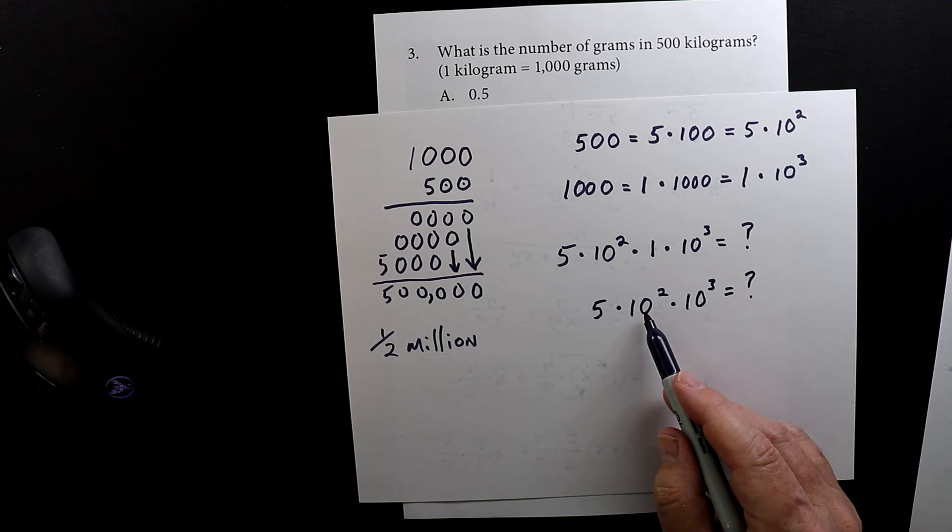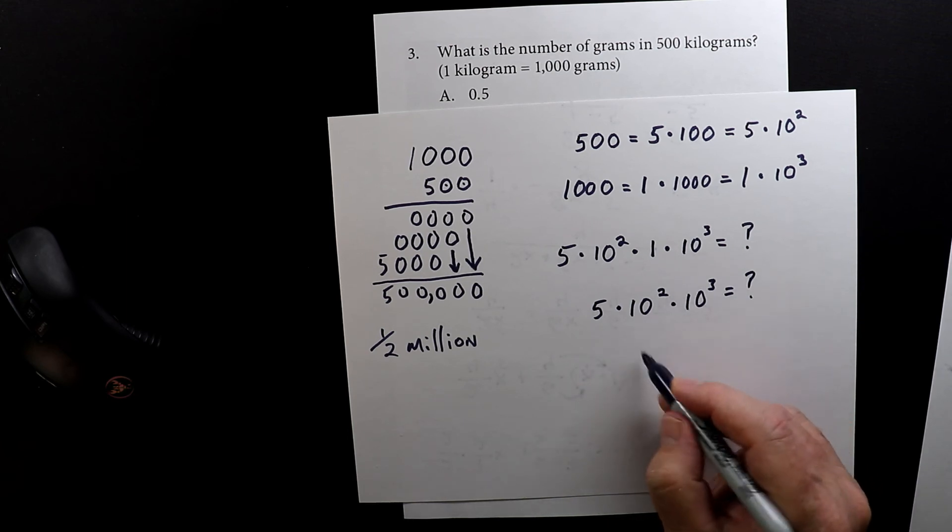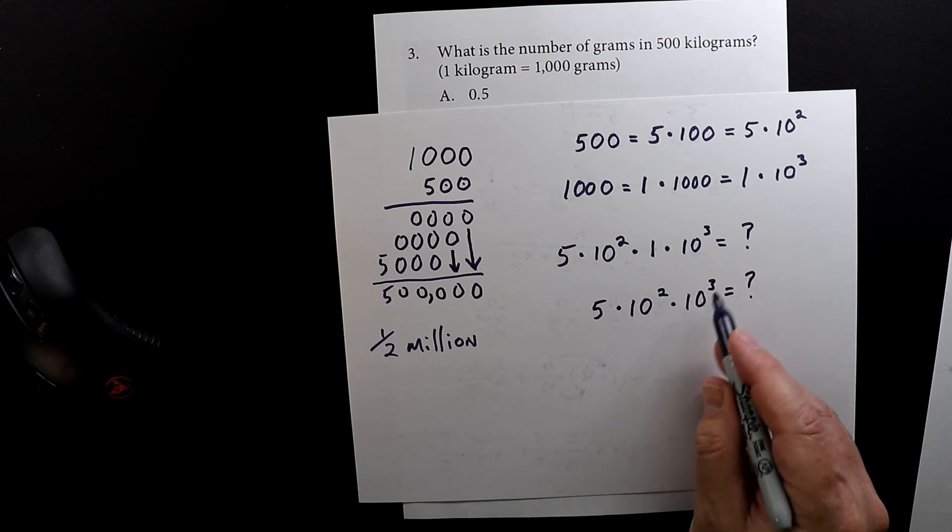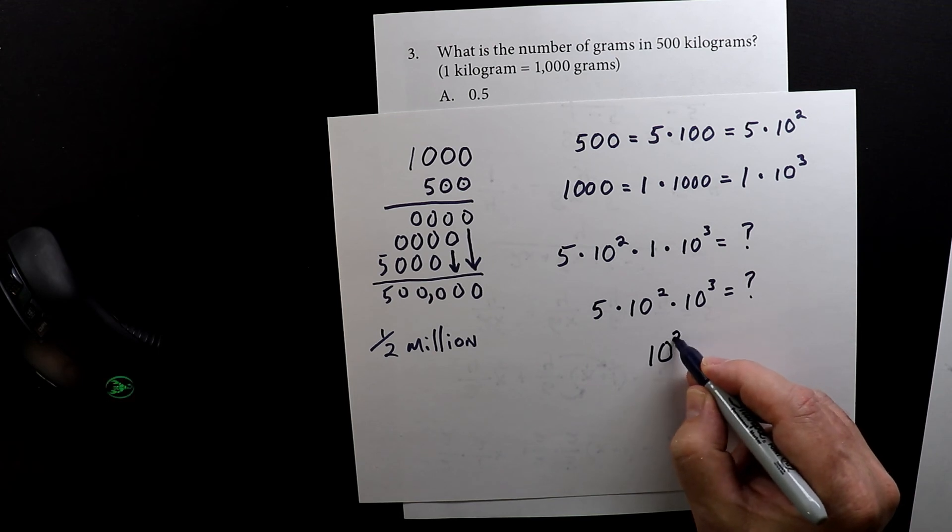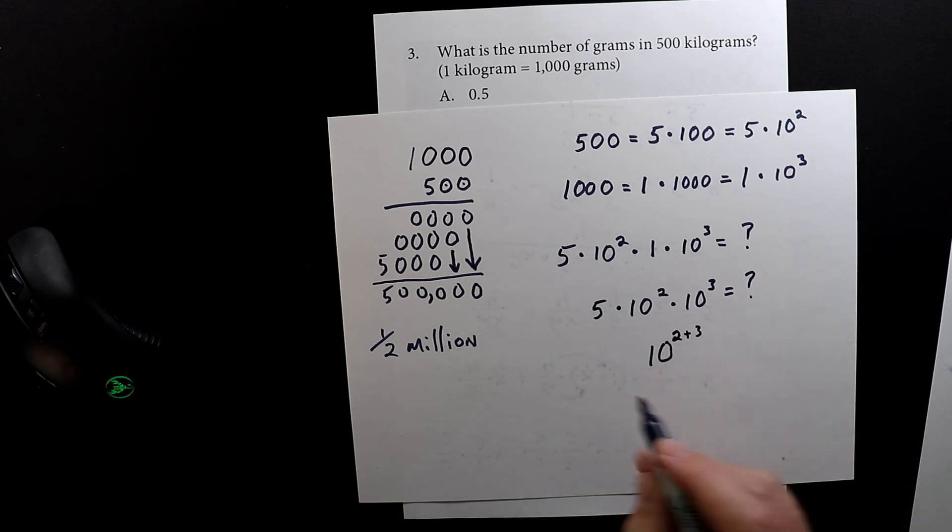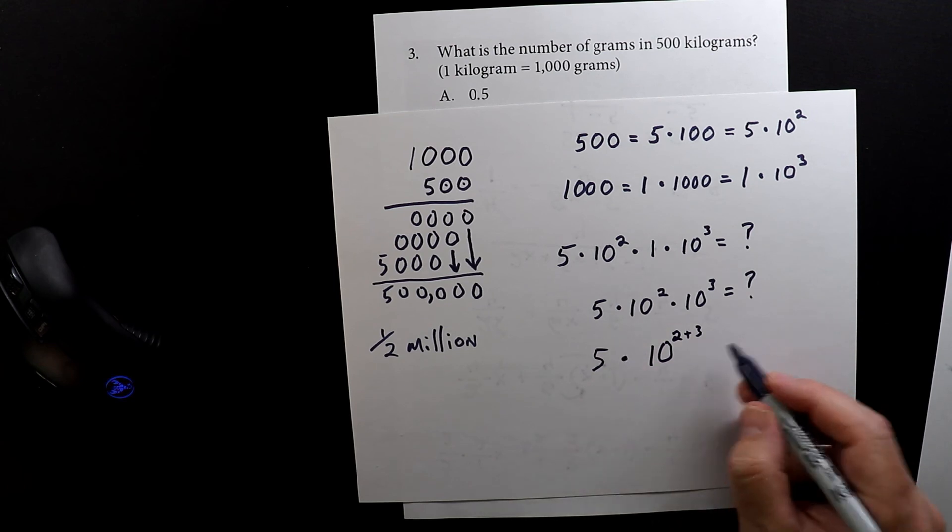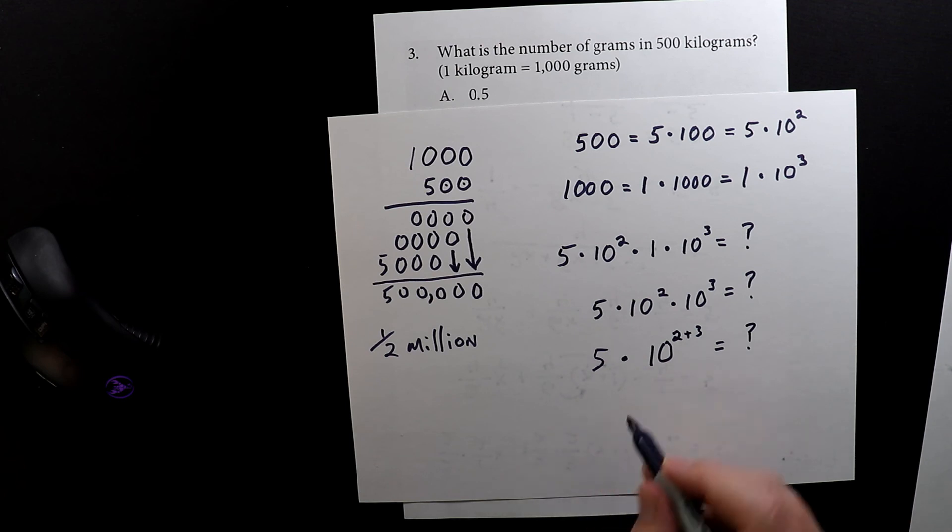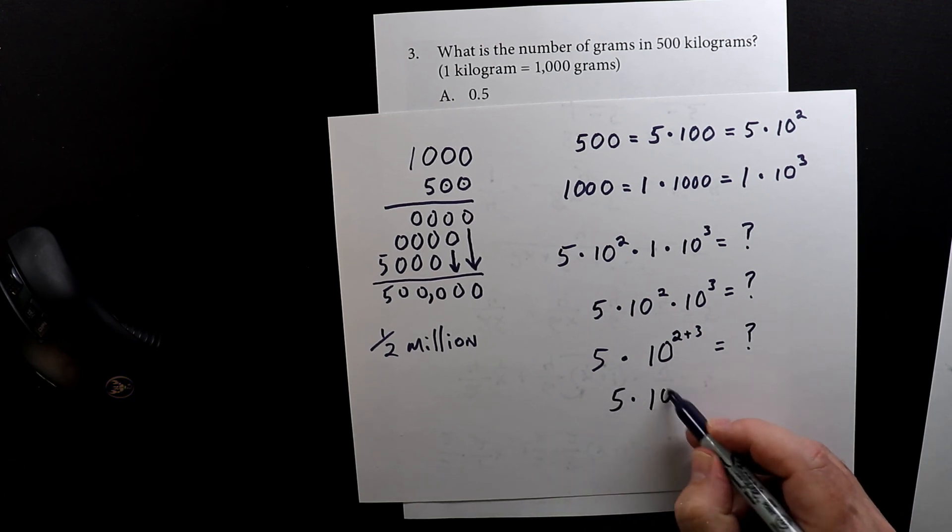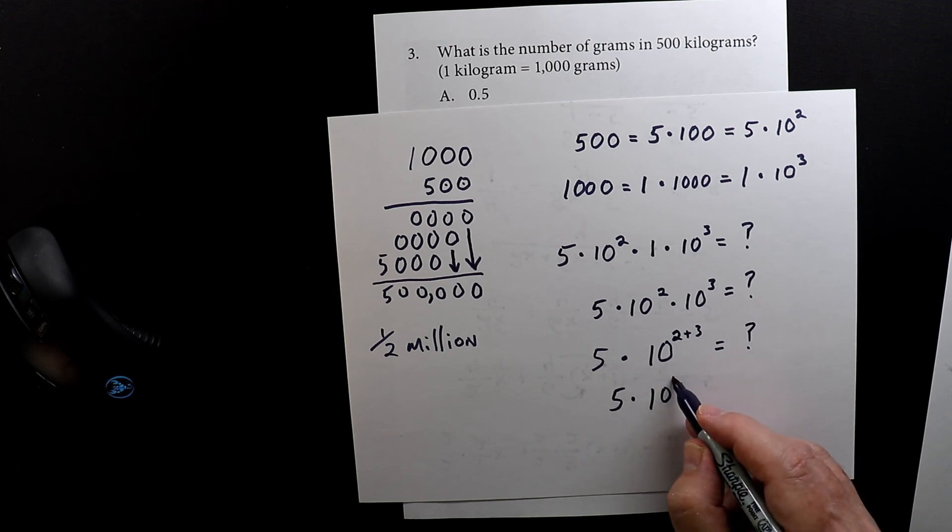When you're multiplying exponents—numbers that have the same base but different powers—when you're multiplying, you add the exponents. So 10 to the second power times 10 to the third power is the same thing as 10 to the (2 + 3). Don't forget the five—that still comes down. So 2 plus 3 is 5, giving us five times 10 to the fifth.